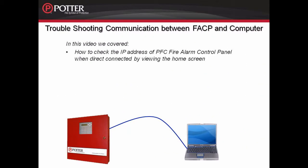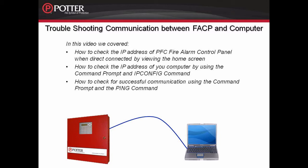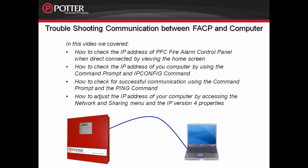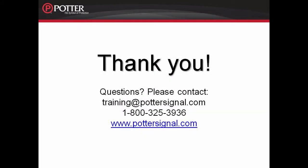In this video, we covered how to check the IP address of the fire alarm control panel when direct connected by viewing the home screen. We showed you how to check the IP address of your computer by using the command prompt and the ipconfig command. We also showed you how to check for successful communication using the ping command, and how to adjust the IP address of your computer by accessing the Network and Sharing menu and the IP Version 4 properties. These things should help when troubleshooting communication between the fire alarm control panel and the laptop computer when you are direct connected. For more information, please visit our website at www.pottersignal.com.